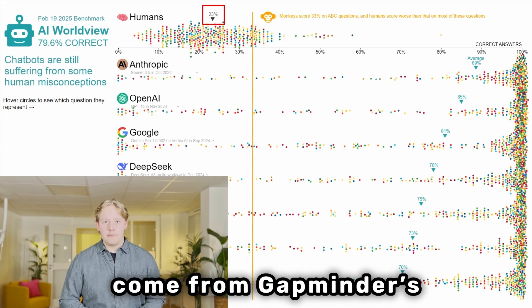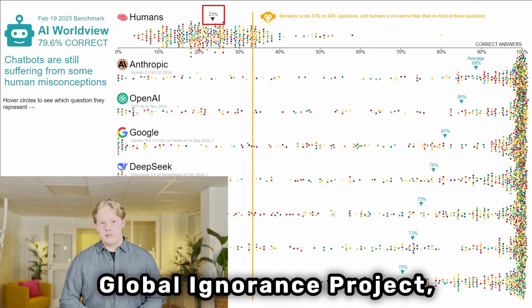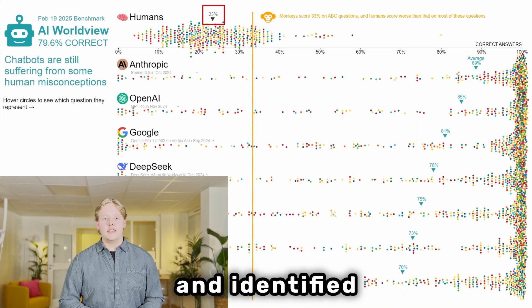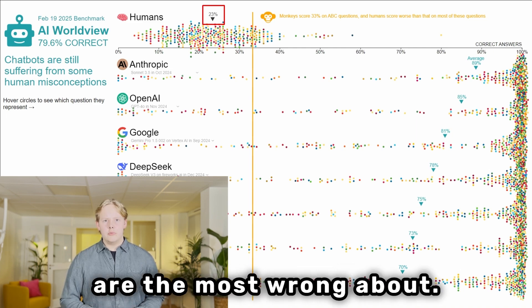These questions come from Gapminder's global ignorance project in which we have asked 4,000 fact questions about global statistics and identified which facts people are the most wrong about.